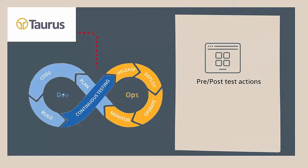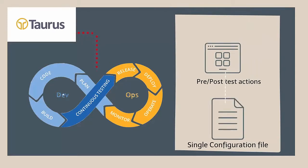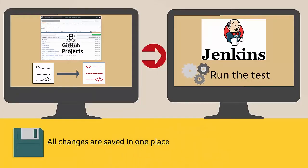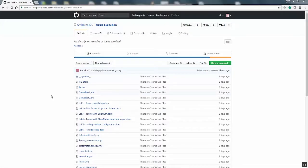This saves time and lets you incorporate your project into the continuous integration process. Taurus facilitates continuous integration style usage because you can manage all pre and post test actions in one configuration file as part of a version control system — that is a GitHub repository. In this video we will see how to integrate Taurus with other continuous integration tools. For this demonstration we are going to use GitHub as the source code management tool and Jenkins and Taurus for continuous integration automation.